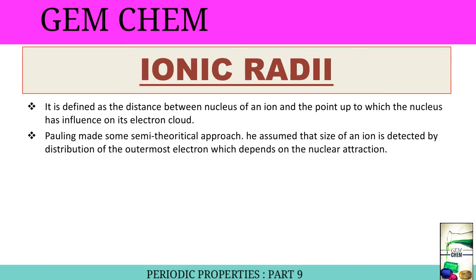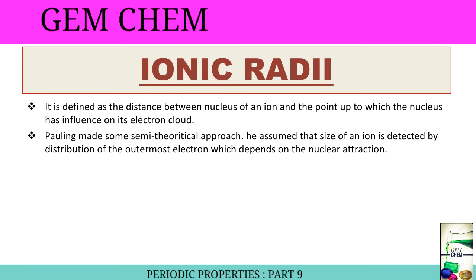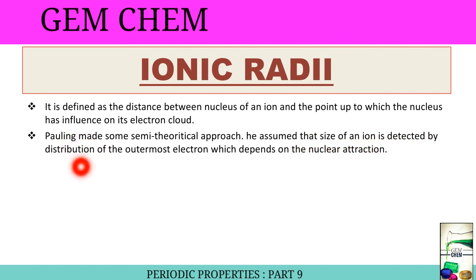Now we deal with ionic radii. It is defined as the distance between the nucleus of an ion and the point up to which the nucleus has influence on its electron cloud — not up to the valence shell, but up to which the nucleus has an influence. Pauling made a semi-theoretical approach, assuming that the size of an ion is determined by the distribution of the outermost electron, which depends on nuclear attraction.